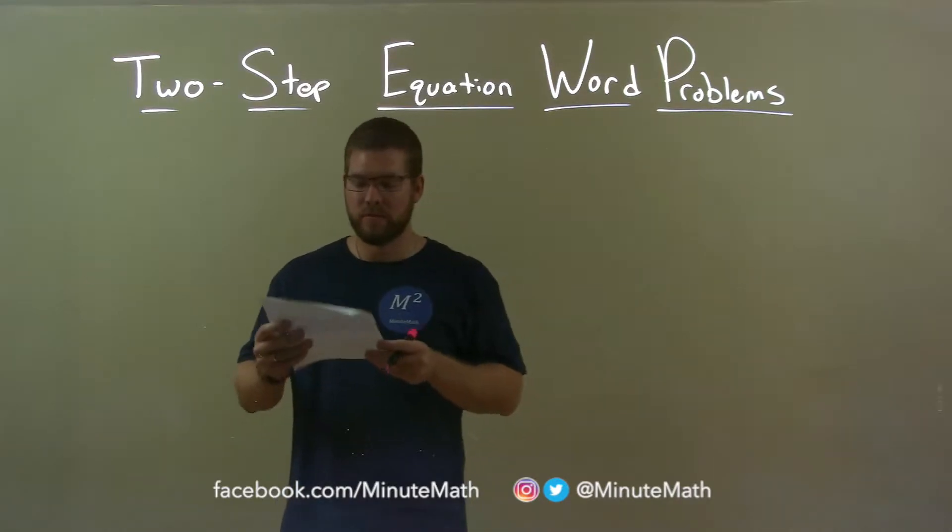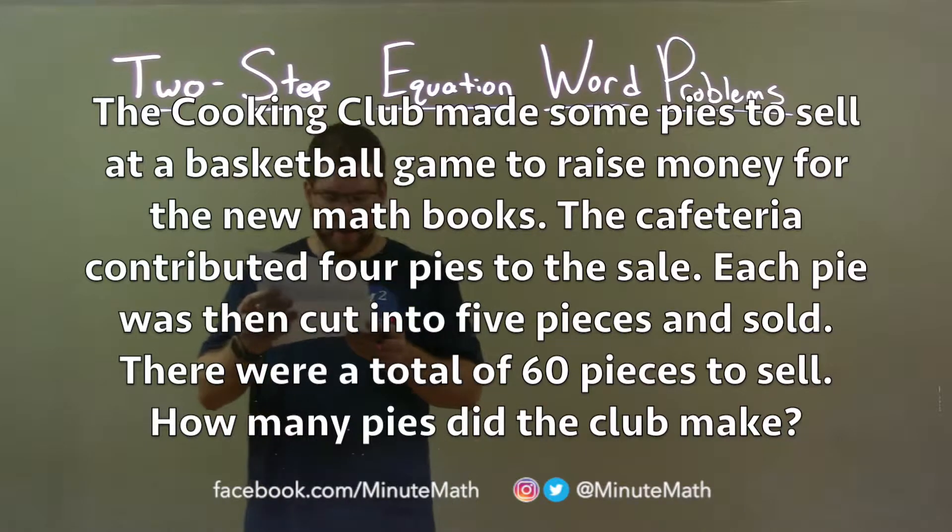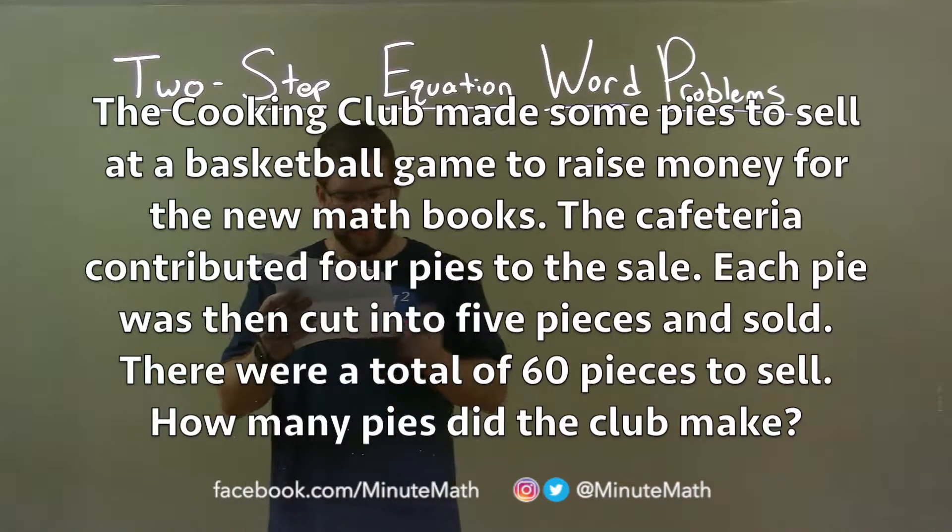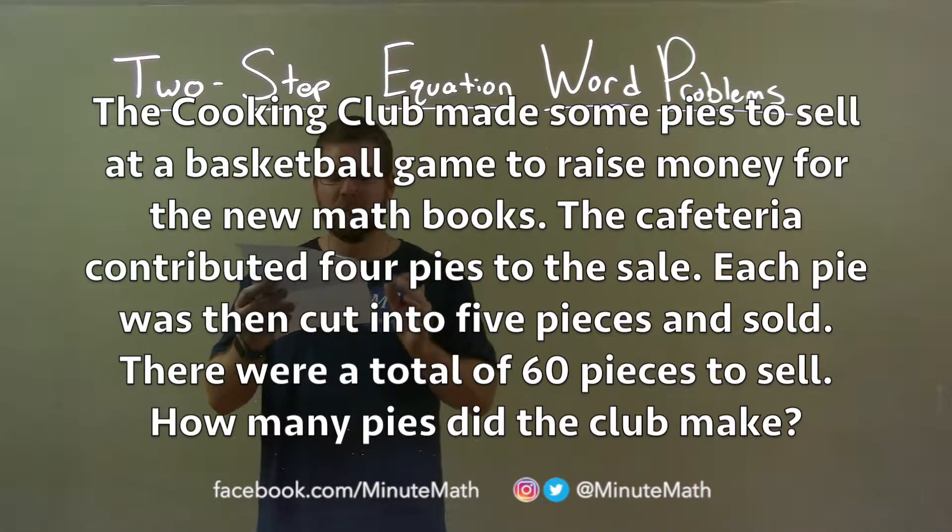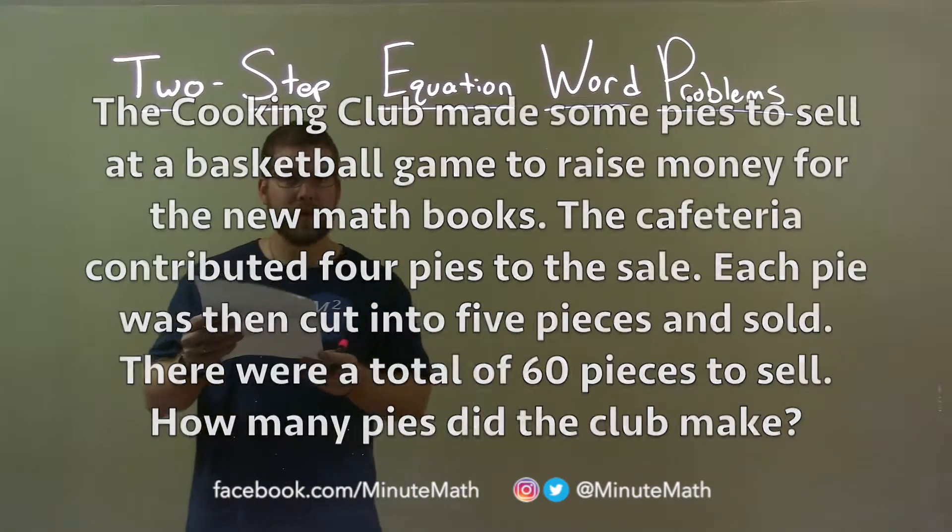We've been given this word problem: The cooking club made some pies to sell at a baseball game to raise money for the new math books. The cafeteria contributed four pies to the sale. Each pie was then cut into five pieces and sold. There were a total of 60 pieces to sell. How many pies did the club make?